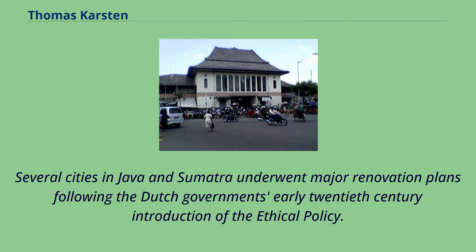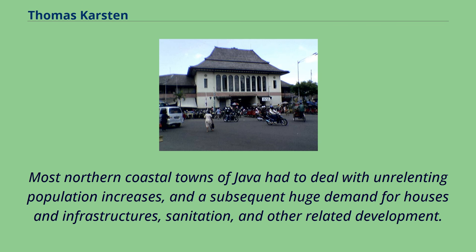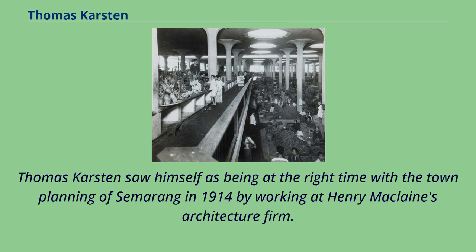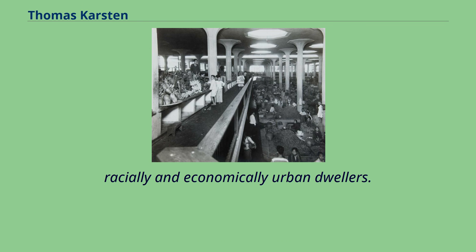Several cities in Java and Sumatra underwent major renovation plans following the Dutch government's early 20th-century introduction of the ethical policy. A new Decentralization Act was enacted in 1903 that enabled local municipalities and regional governments to develop and plan their own territory. Most northern coastal towns of Java had to deal with unrelenting population increases and a subsequent huge demand for houses, infrastructure, sanitation, and other related development. Thomas Carsten saw himself as being at the right time, with the town planning of Semarang in 1914 by working at Henry MacLean's architecture firm. In colonialism, all social components are expressed through the articulation of the form of difference, and colonial urban planning was precisely implemented by the order of relationship between various ethnically, racially, and economically distinct urban dwellers. Carsten rejected this idea and began to include more indigenous elements intertwined with typical European elements.